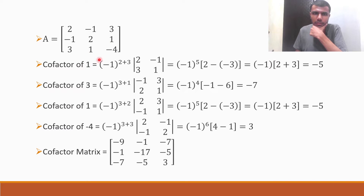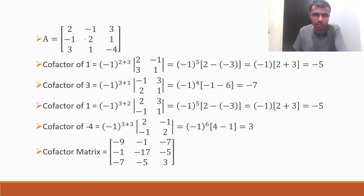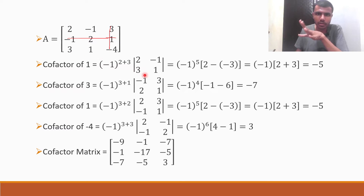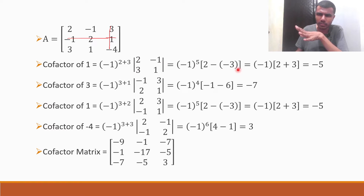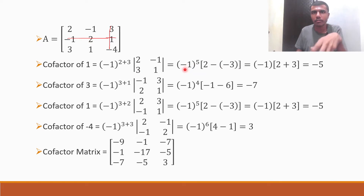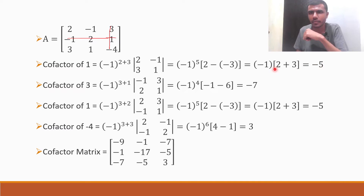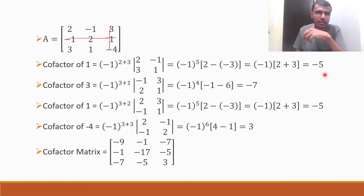And we need to find out the cofactor of 1. 1's position is second row, third column. So minus 1 to the power 2 plus 3 into: strike off the row and column in which 1 is there, leaving 2, minus 1, 3, 1. So 2 minus 3 into minus 1 is minus 3, giving 2 minus 1. Minus 1 to the power 5 is minus 1 into 2 plus 3, which is nothing but minus 1 into 5, which is minus 5.